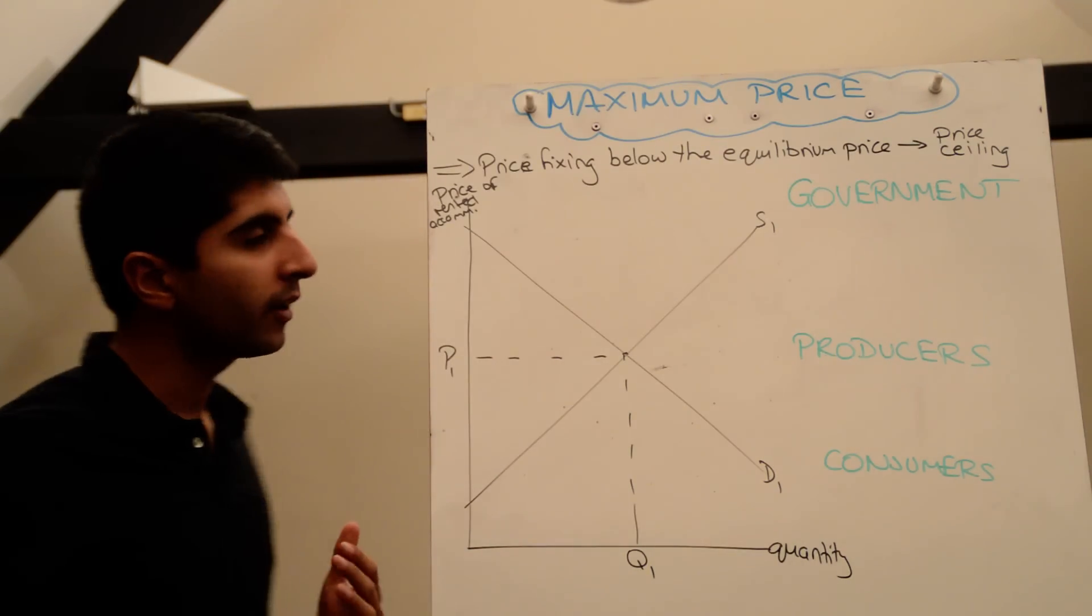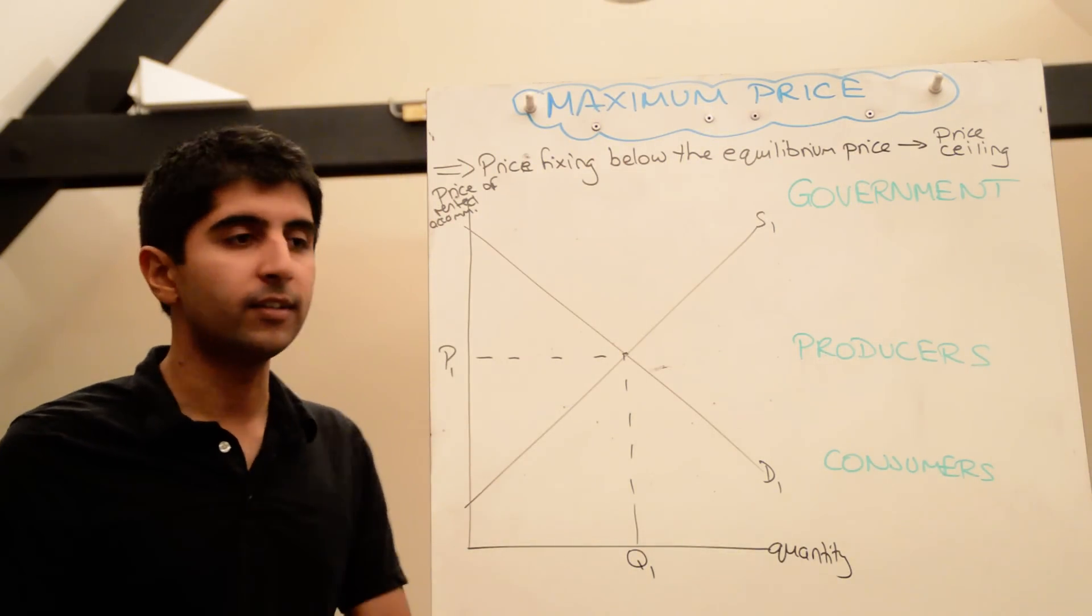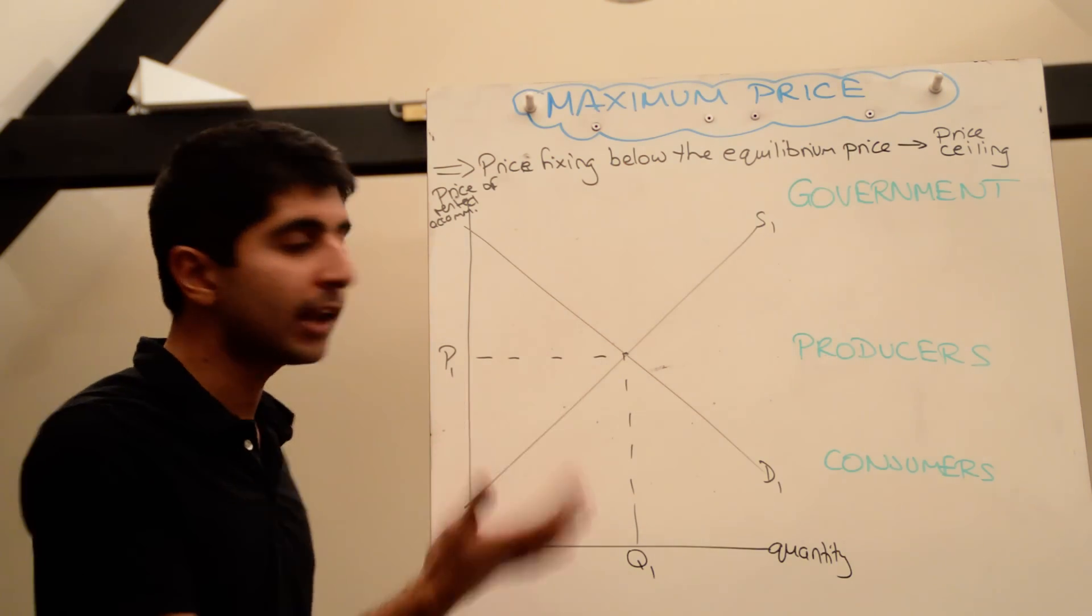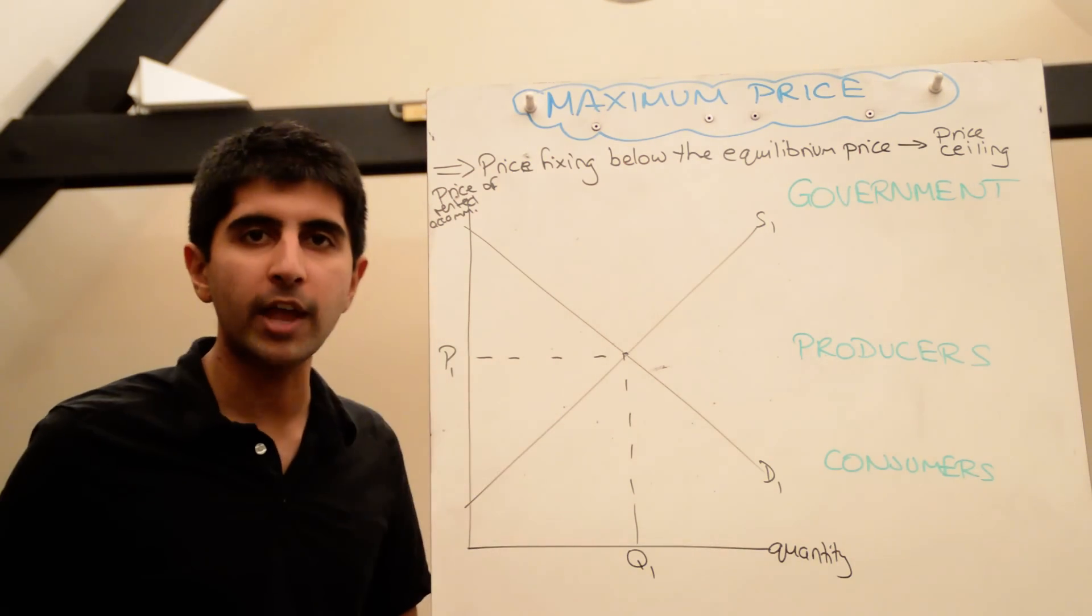What is a maximum price? Well, it's a price control, fixing the price done by the government, normally below the equilibrium. It could be above, but usually below the equilibrium.